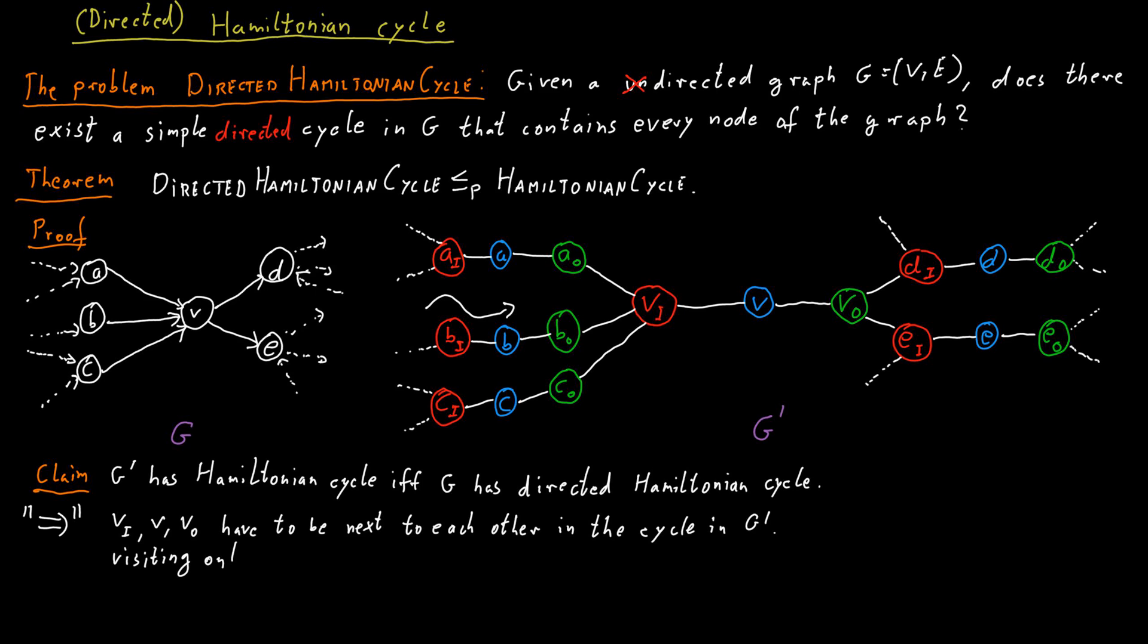But now if we only look at the blue nodes here, the original nodes, and visit them in the same order, then that's a directed Hamiltonian cycle in the original graph.